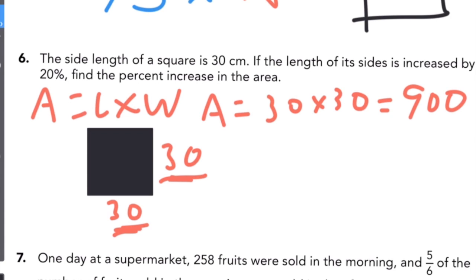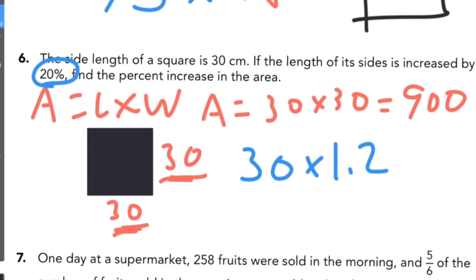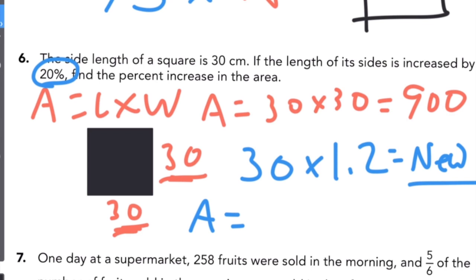The sides are increased by 20%, so find the new side: 30 times 1.2, because 1.2 represents 130%... that gives you the new side length. Then find the new area by multiplying the new side by itself, and that gives you the new area.